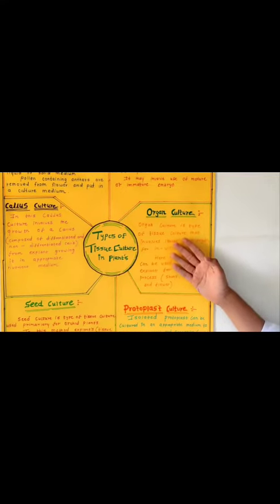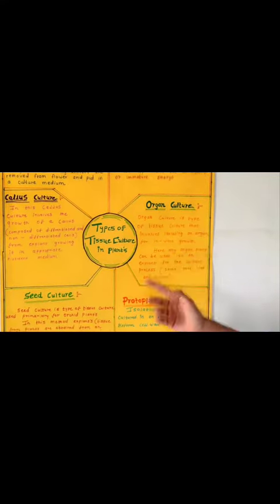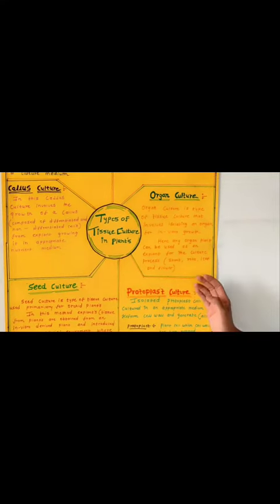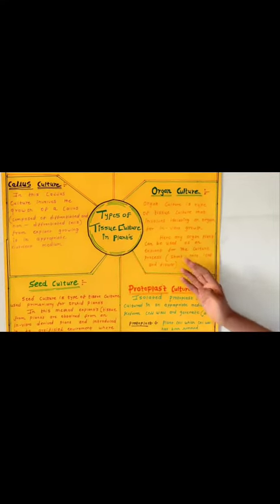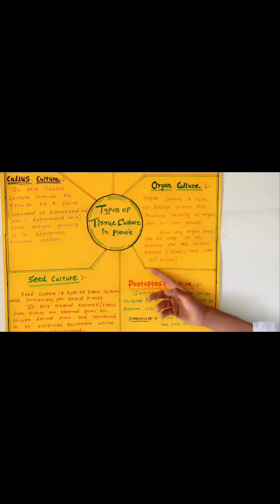Organ culture. Organ culture is a type of tissue culture that involves isolating an organ for in vitro growth. Here any organ can be used as an explant for the culture processes such as shoot, root, leaf, and flower.